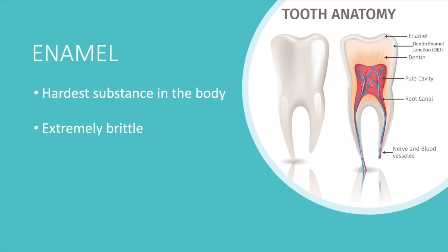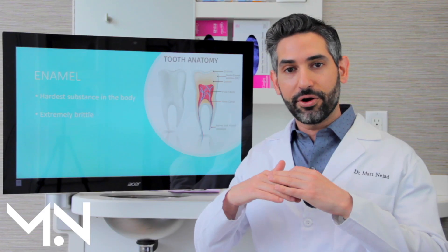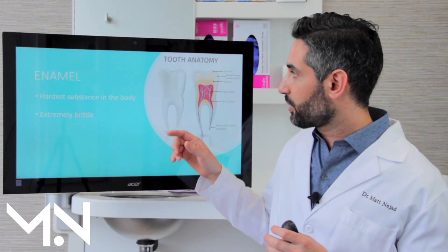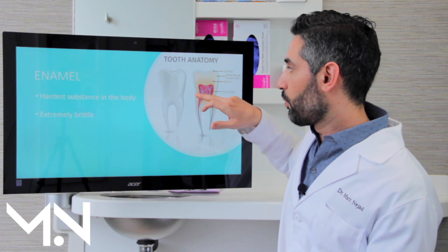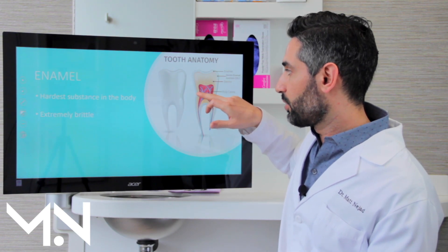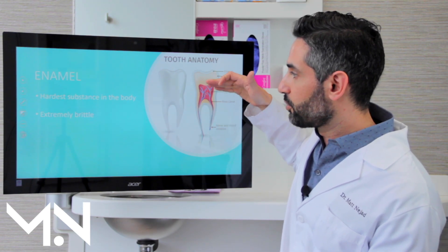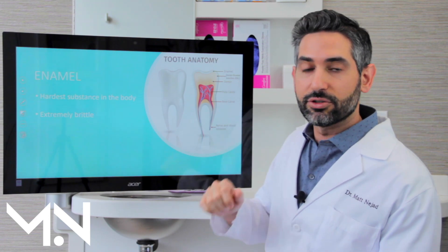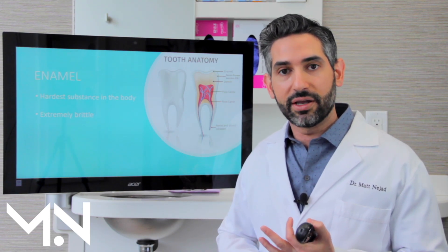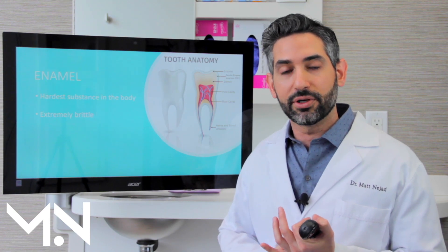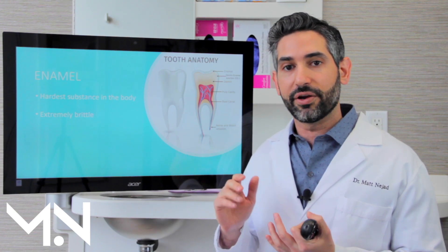Enamel is the hardest substance in our body. Enamel makes the hard outer shell of the tooth. As you look at this photograph, your enamel is all around the tooth — it actually stops right around where the root of the tooth basically starts. It's the hardest substance in the body, very strong, and can withstand a lot of forces, but it's also very brittle.